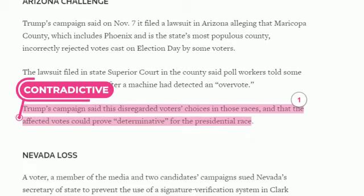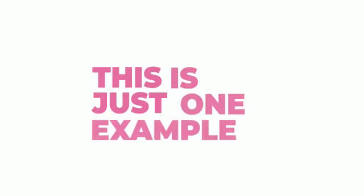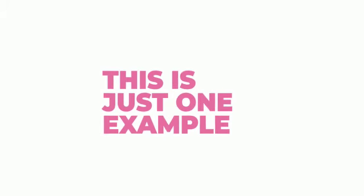Now look at the contradictory bridge. Here is a bridge to the same article saying that affected votes in Arizona could prove to be determinative for the presidential race, which contradicts the report published in CNN saying that the lawyers for the Trump campaign dropped the lawsuits in Arizona. This is just one example — there could be hundreds of bridges associated with a popular piece of content.